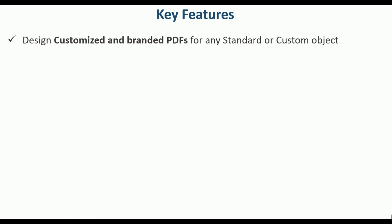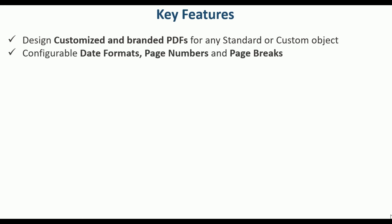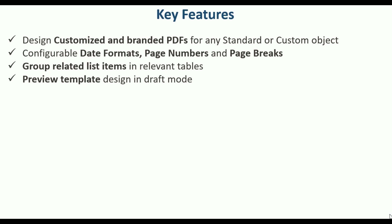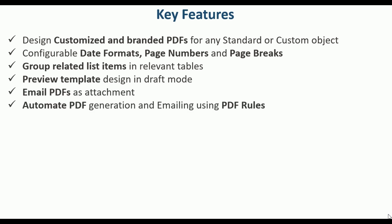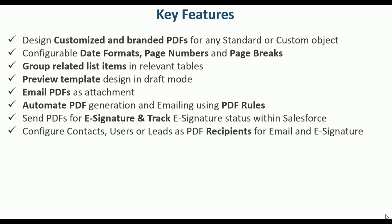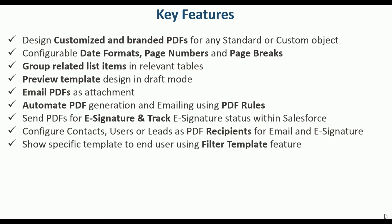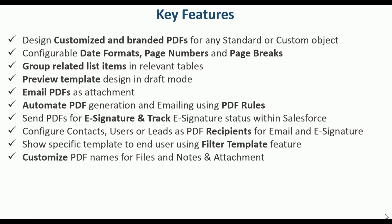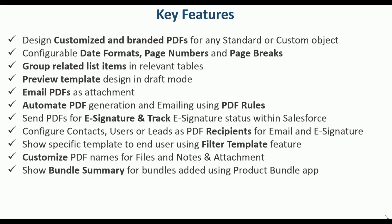To summarize, here are the key features of the PDF Generator application: design customized and branded PDFs for any standard or custom object; configurable date formats, page numbers, and page breaks; group related list items in relevant tables; preview template design in draft mode; email PDFs as attachments; automate PDF generation and emailing using PDF rules; send PDFs for e-signature and track e-signature status within Salesforce; configure contacts, users, or leads as PDF recipients for email and e-signature; show specific templates to end users using the filter template feature; customize PDF names for Files and Notes and Attachments; show bundle summary for bundles added using the product bundle app; and generate PDFs in Salesforce-supported languages.